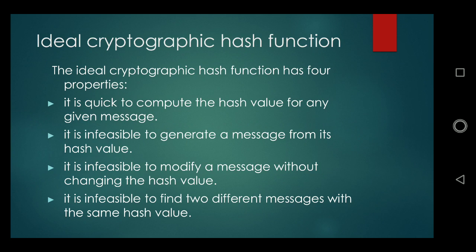An ideal cryptographic hash function has four properties. It is quick to compute the hash value for any given message. It is infeasible to generate a message from its hash value. It is infeasible to modify a message without changing the hash value. It is infeasible to find two different messages with the same hash value.